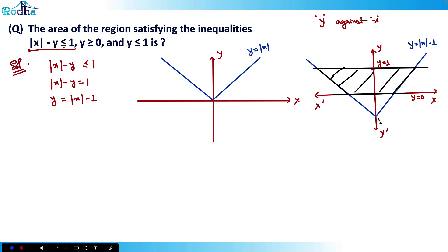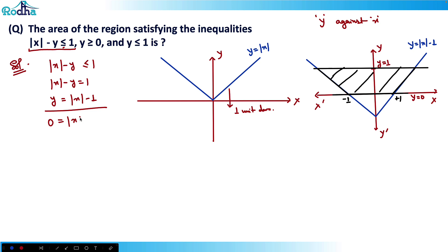Once I shifted this graph one unit down, this graph is y = |x| - 1. The graph intercepts the x-axis. Putting y = 0: 0 = |x| - 1, so |x| = 1, so x = ±1. That gives two intersecting points at x = +1 and x = -1.